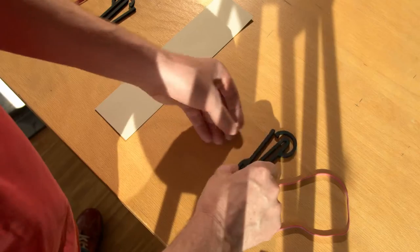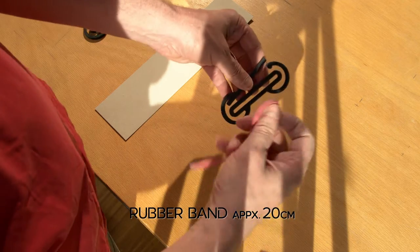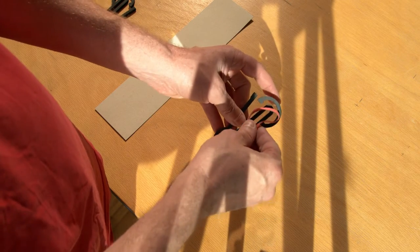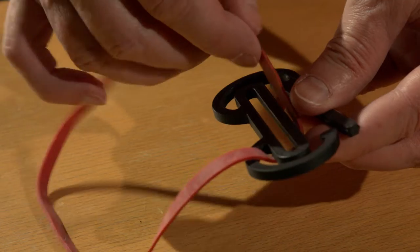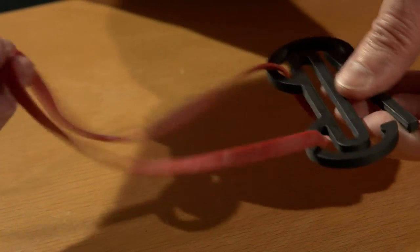We start by inserting the rubber bands into the respective holding patterns of the brackets. We pull tight and repeat the same process for the other side.